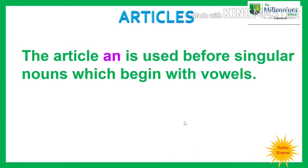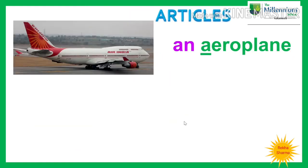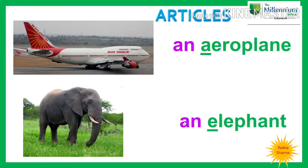Let us see the next article, which is AN. The article AN is used before singular nouns which begin with vowels. For example, an apple, an aeroplane, an elephant. Do you remember which are the vowels in English? A, E, I, O, U — these five alphabets are called vowels. Here A and E are vowels, so we use the article AN.